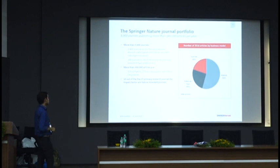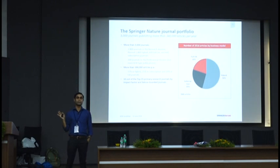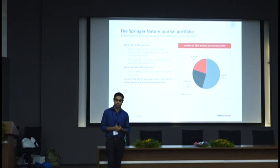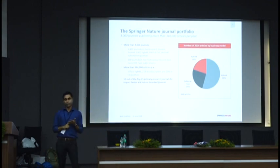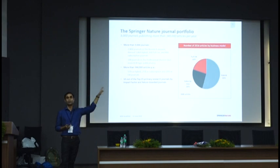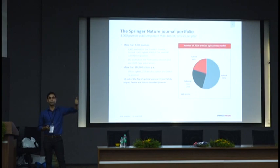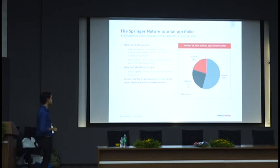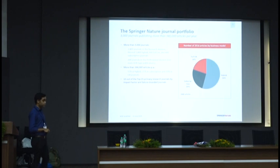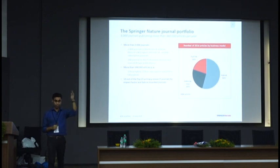Talking about the journal portfolio, we publish more than 3,000 journals, of which about 1,800 are hybrid journals. A hybrid journal is subscription-based but also gives you the option of open access — unlike a fully open access journal, the open access option is not mandatory. Out of the articles published in 2016 — more than 344,000 — over half were in hybrid journals and one-fifth in fully open access journals. Out of the top 25 journals by impact factor, 10 are Springer Nature-branded journals.